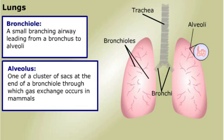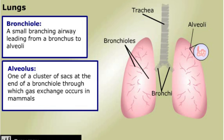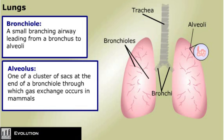The development of gills for aquatic animals and lungs in terrestrial animals shows how two different structures have evolved to perform the same function: obtaining oxygen for cellular metabolism.